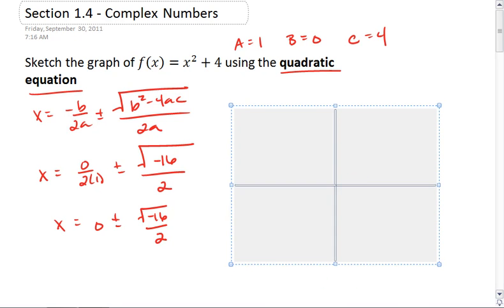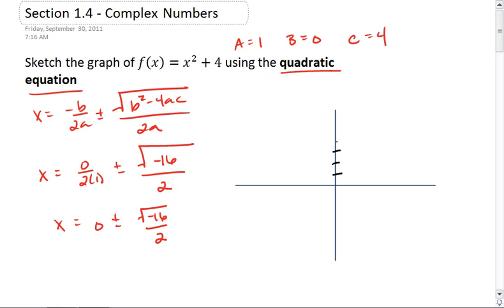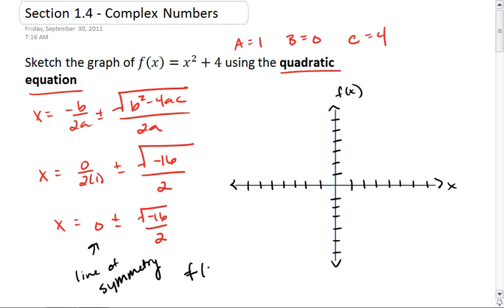So when we're sketching this, we can still use the line of symmetry, which is just our y-axis in this case. And then we can find what f(0) is, and we find that f(0) = 4, so our vertex is at (0, 4).